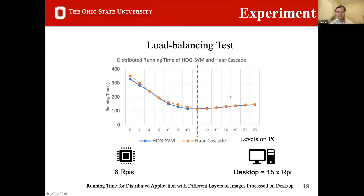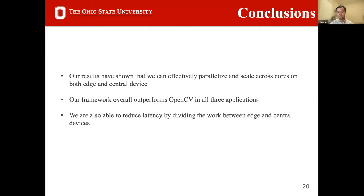In the load balancing test, the system estimates the desktop to be 15 times the processing power of a single Pi, with 6 Pis available. Accordingly, the system assigns 2.5 units of workload to the desktop and 1 unit to each Pi. The dashed green line in the figure shows the estimated optimal workload distribution, and the curves show how actual latency varies as workload distribution changes. Under the system's recommendation, both cases operate roughly at optimal latency. The implementation thus shows better scalability, lower processing latency on both cloud and Raspberry Pi, and a reasonable workload division across the device hierarchy.